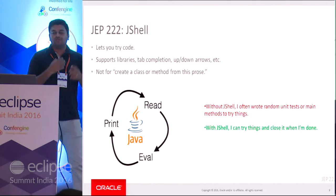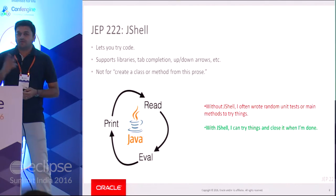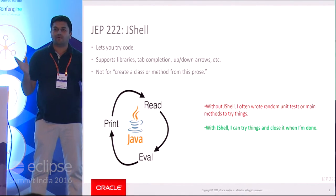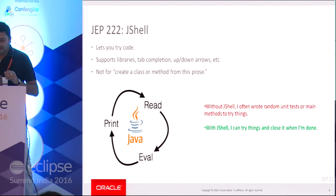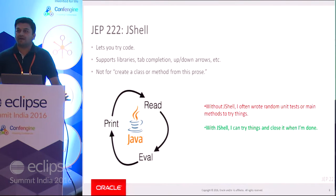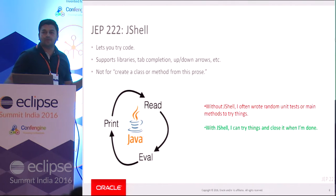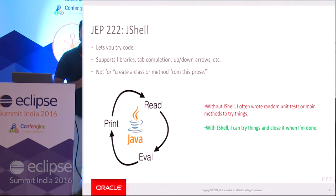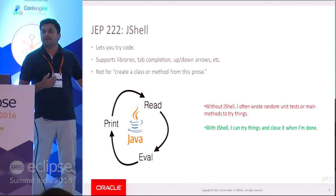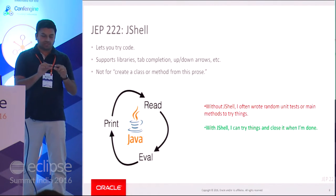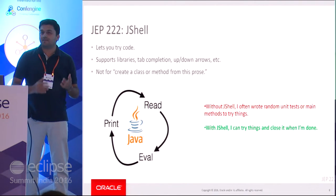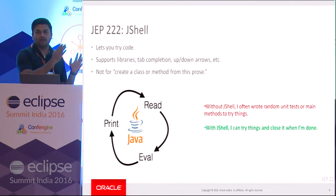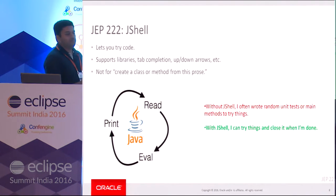Before getting into code changes, there are two things I find really neat. First is JShell — is anyone aware of JShell? JShell is a REPL: Read, Eval, Print, Loop. Other languages have had interactive coding consoles for a while. With JShell, Java now has REPL functionality — you can write code and get output immediately without any boilerplate like public static void main.